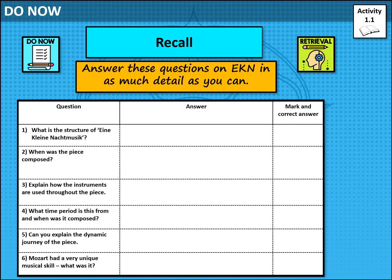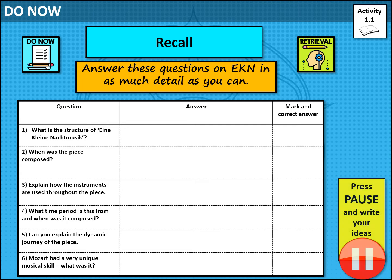So let's start with our do now — just a little bit of recall today. I'd like you to answer these following questions: What is the structure of Eine Kleine? When was the piece composed? Explain how the instruments are used throughout the piece. What time period is it from? Can you explain the dynamic journey of the piece? And Mozart had a very unique musical skill — what was it? Please pause the video now and give yourself two or three minutes to go through these six questions.